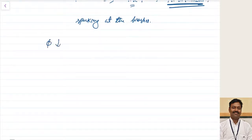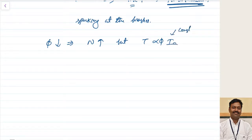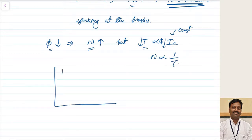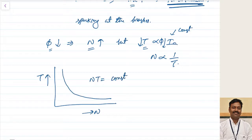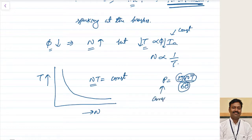As the flux is decreased, speed increases. But torque is proportional to phi times Ia. For a given load Ia is constant, so if flux decreases, torque decreases. Whenever flux is controlled, speed increases and torque decreases for a given current. So speed is inversely proportional to torque. The torque-speed characteristic shows that N times T is constant.